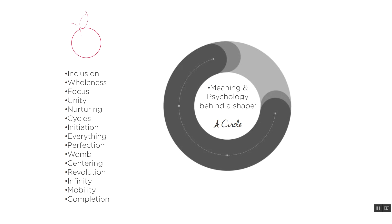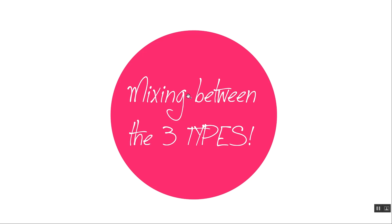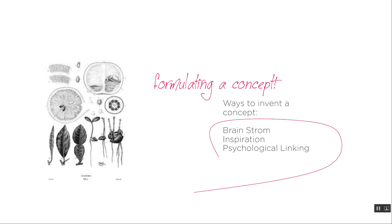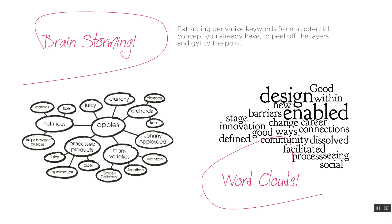Of course you can mix between the three types of concepts, and this is a really deep level of interior design. So we talked about the types of concepts — now how do we formulate one? We can have a brainstorm session, we can get inspired from something, or we can do psychological linking. The way I brainstorm, and I encourage you to brainstorm as well, is to have a main word where all of the other words are linking to this main word.